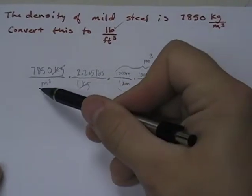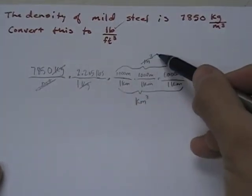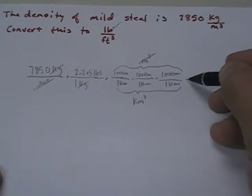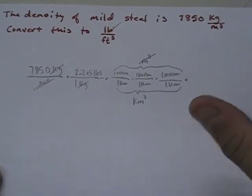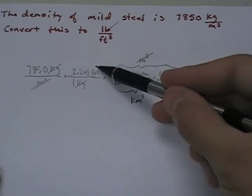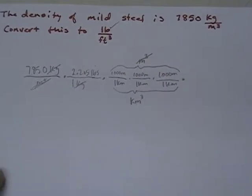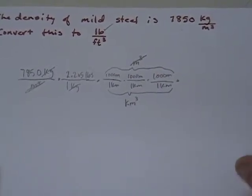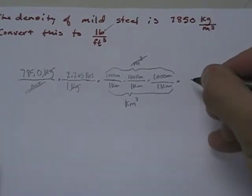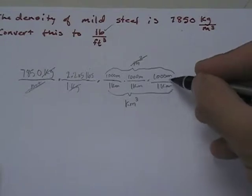This guy is going to cancel with this guy. So if I stopped right now, I have pounds per cubic kilometer, which is an odd unit and you wouldn't use it. So now what do I know? Well, I want to convert, I want to get this into the English system. I have to get this to feet.